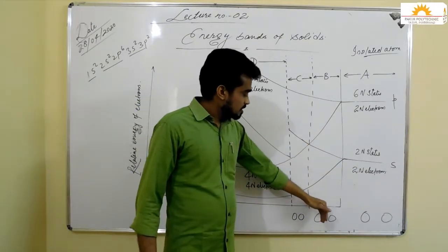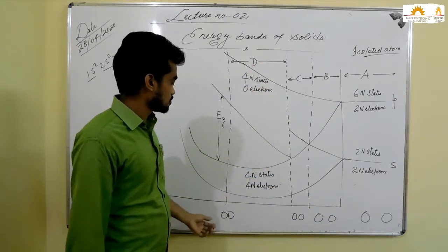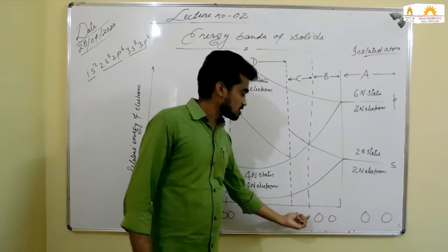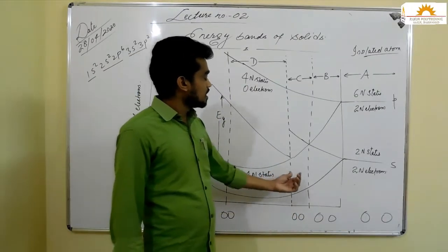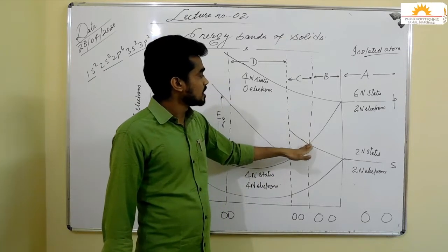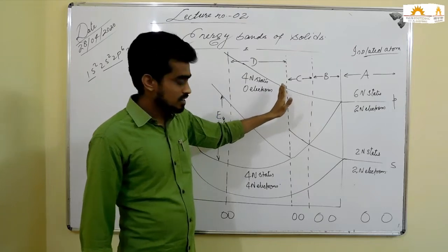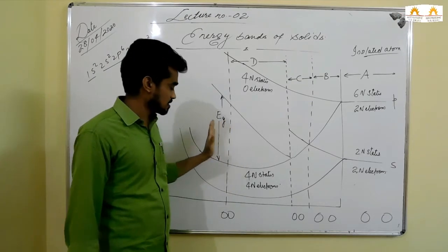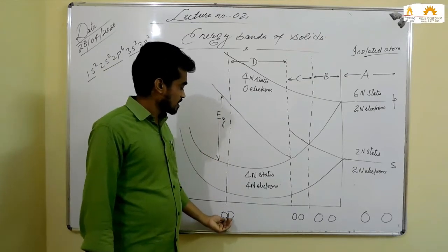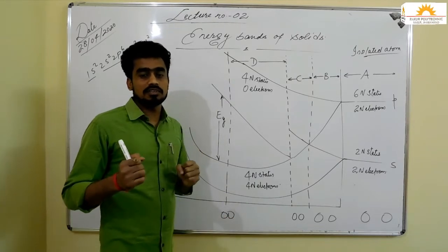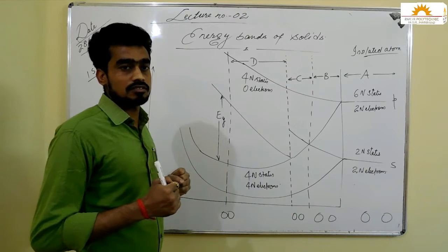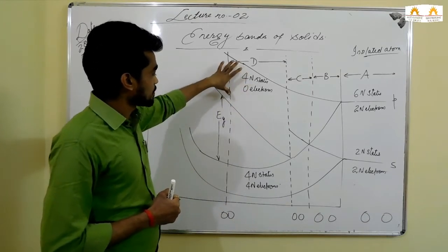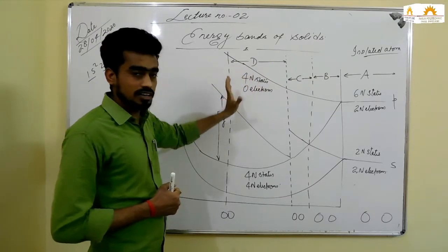We have to study the solid, so we continuously decrease the space between the atoms. As we continue decreasing the space, we reach the state of the silicon crystal, where the space between two atoms is very small. At this point, we see that the energy levels are divided into two parts: a lower band and an upper band.